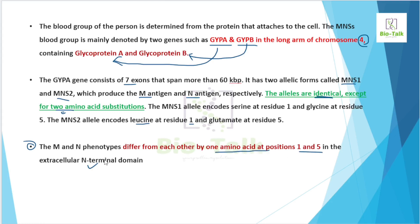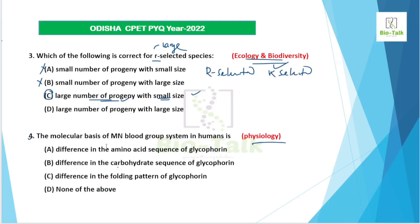Looking at the answer options: the difference is in the amino acid sequence of glycophorin, not in the folding pattern. The correct answer is difference in the amino acid sequence of glycophorin. Options related to folding pattern are incorrect. So the molecular basis of the MN blood group system is one amino acid difference in glycophorin.